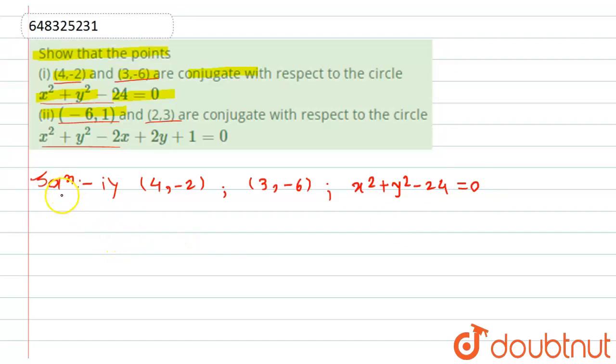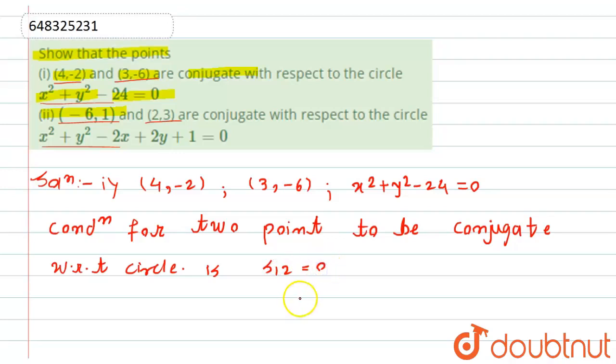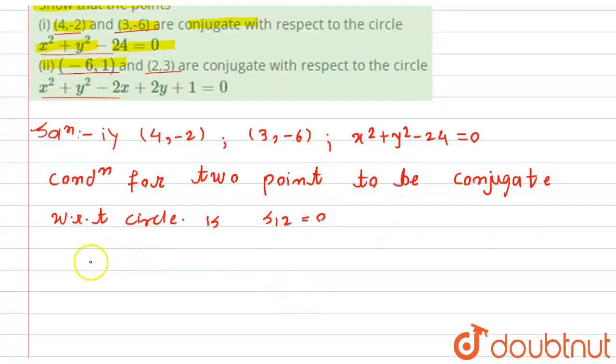So we know the condition. That is, first of all, we will write the condition for two points to be conjugate with respect to circle, which is S₁₂ should be equal to 0. Now, what is mean by S₁₂?